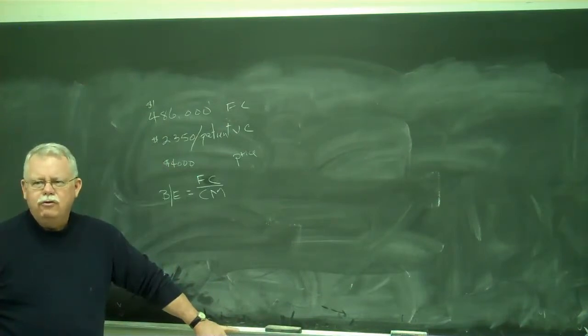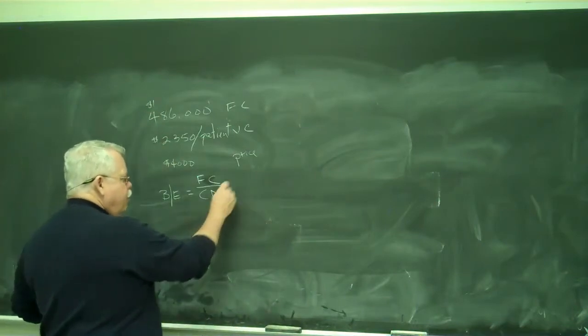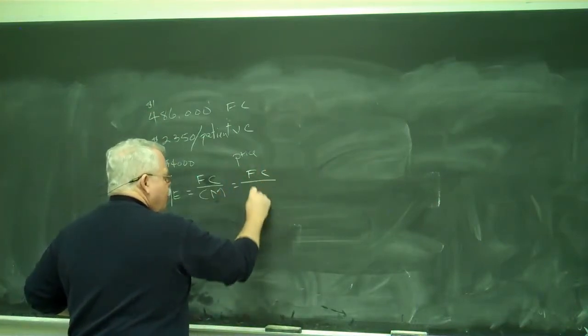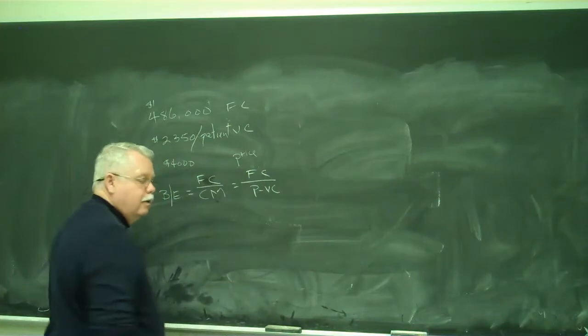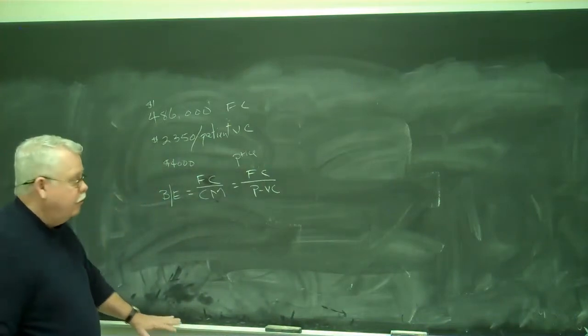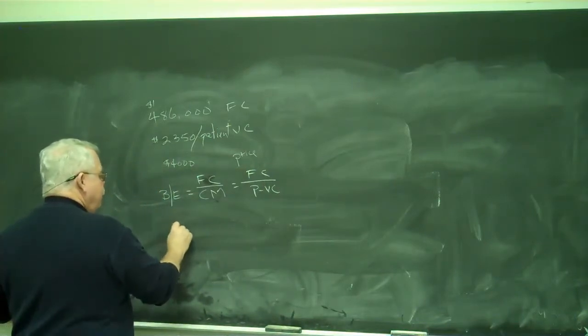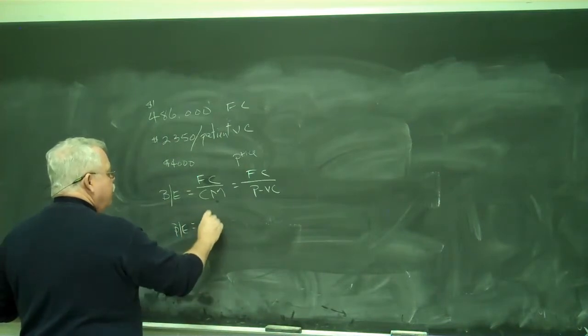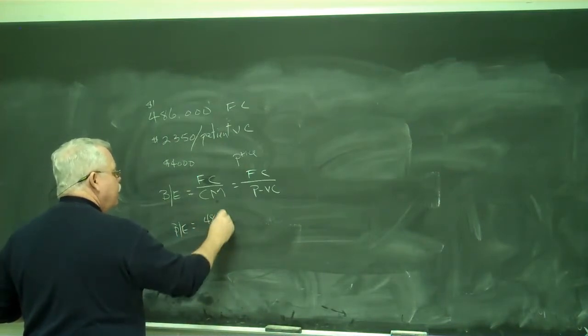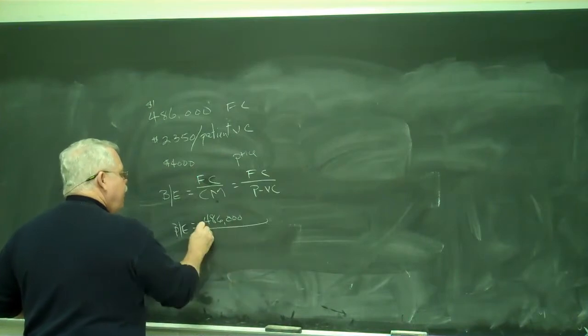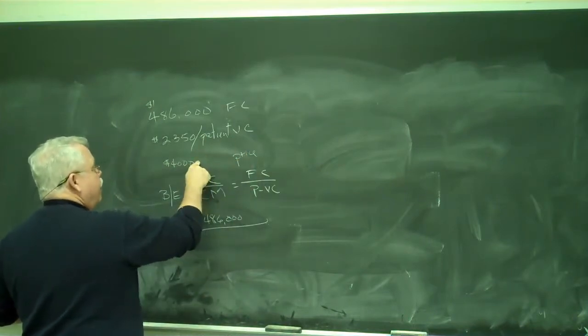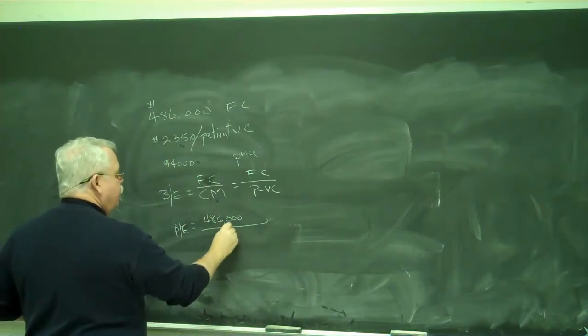Contribution, what are we going to contribute to? The contribution margin is your price minus your variable cost. So in this example, break even would be $486,000 divided by price, $4,000 minus variable cost, $2,350, which would be $1,650.